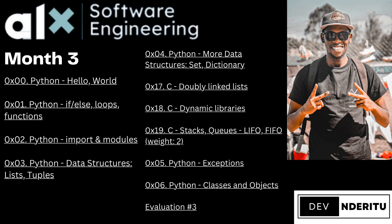You'll also do Python exceptions and an intro to classes and objects, plus an evaluation. Anything you do in C in sprint two is mostly implementing an algorithm — that's one key thing to keep in mind, since all the C fundamentals were already covered in sprint one.